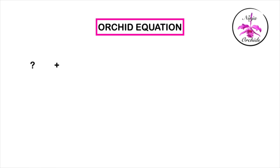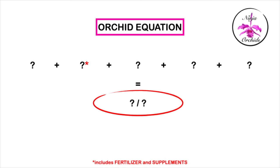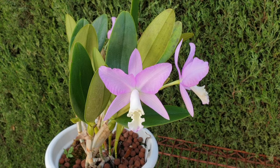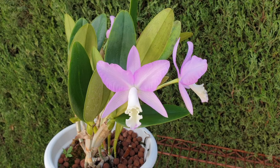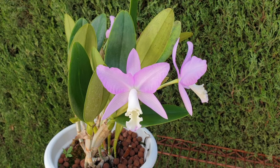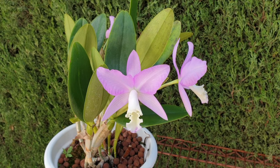Disclaimer: math is not my forte, but orchids are. Thinking caps on and let's see if I can transfer what I have in my head onto something that you will find super useful when assessing your growing conditions and how to interpret what needs to happen when. Back to my favorite topic: math. This could be an epic analogy fail, but oddly enough it works for me, so give me a chance to explain myself.